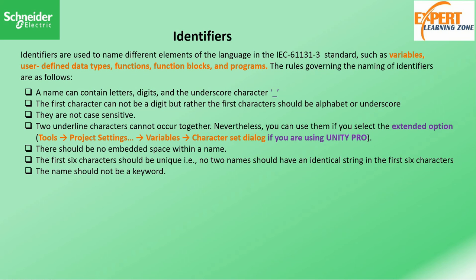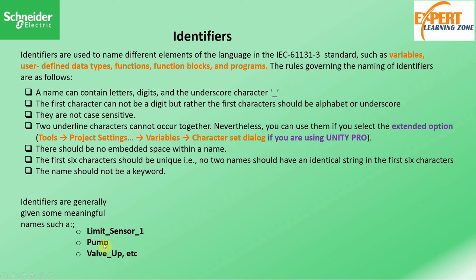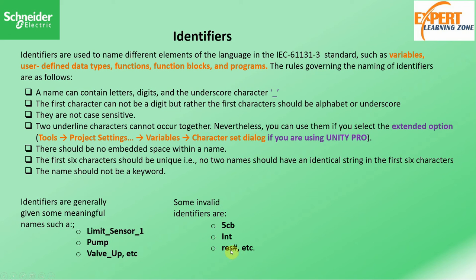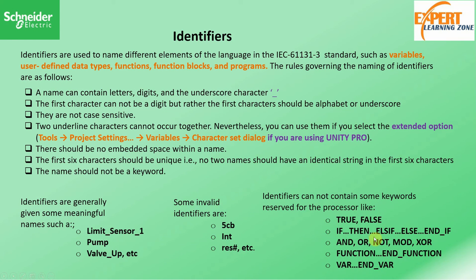There should be no embedded spaces within the name. The first six characters should be unique — no two names should have an identical string in the first six characters. The name should not contain keywords. Examples of valid names include: Limit, Sensor_1, Pump, Valve_Up. Invalid names include: 5CB (starts with a digit), INT (a reserved keyword), and names containing the hash symbol, which is not accepted.